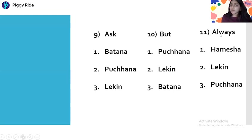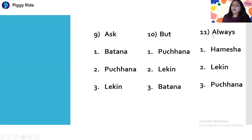Question eleven is 'Always.' Always means — option one: Hamesha, option two: Lakin, option three: Pochna. The correct answer is Hamesha. Always means Hamesha. Lakin is the Hindi form of But, Pochna is the Hindi form of Ask, and Batana is the Hindi form of Tell. Tell means Batana. So: Tell means Batana, Ask means Pochna, But means Lakin, Always means Hamesha.